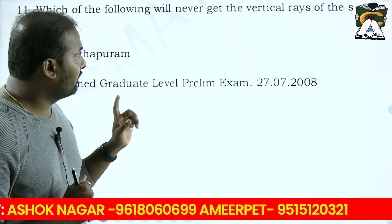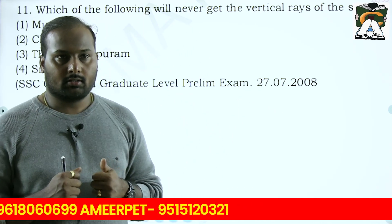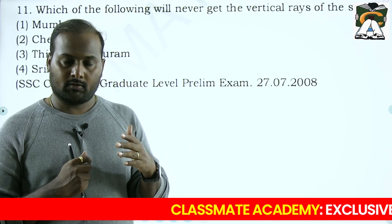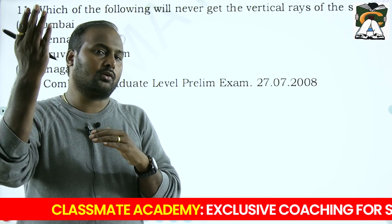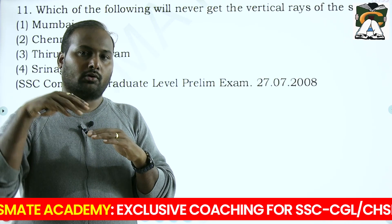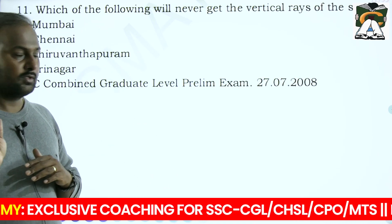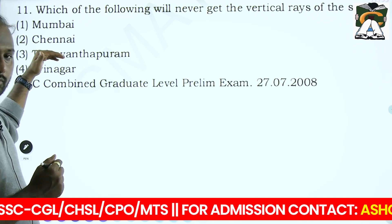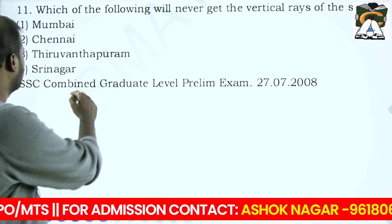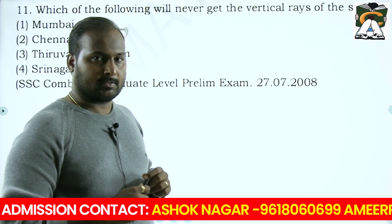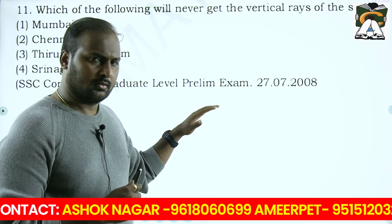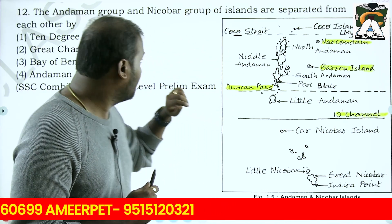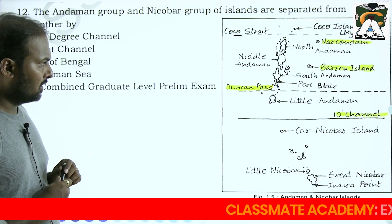'Which of the following will never get the vertical rays of the sun?' We know that sun rays will never fall above the Tropic of Cancer. So we check which city is present above the Tropic of Cancer. In this case, Mumbai, Chennai and Thiruvananthapuram are all below the Tropic of Cancer. Your answer is Srinagar, which is above the Tropic of Cancer.